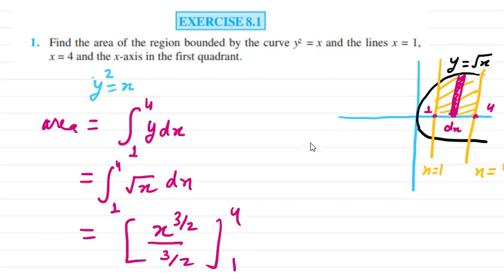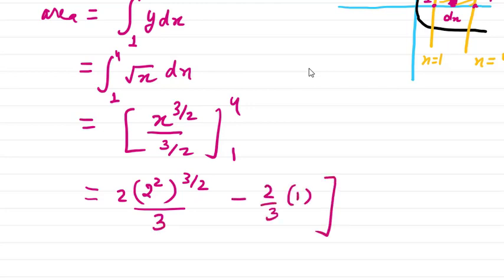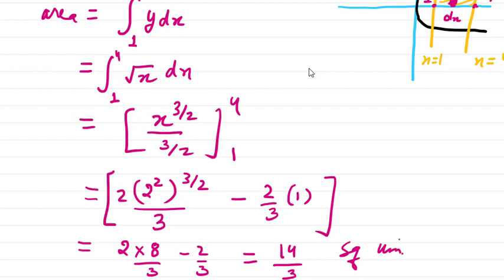You can write 4 as 2². So (2²)^(3/2) × (2/3) - (2/3) × 1. Now simply solve it. You'll get 2³ × (2/3) = 8/3 - 2/3. Overall you'll get 14/3 square units. That is the answer for this question.